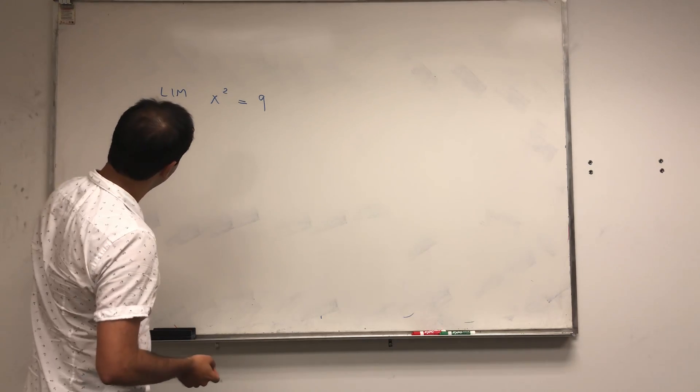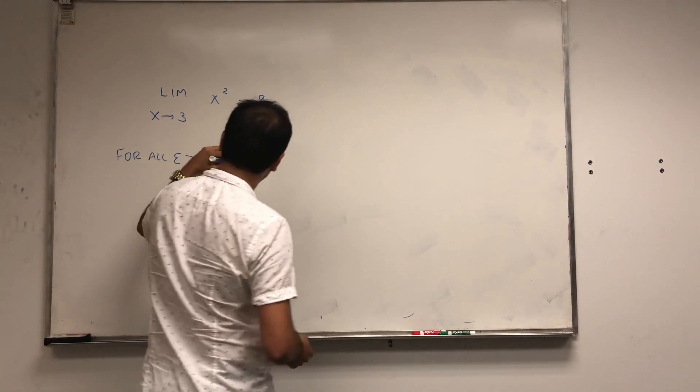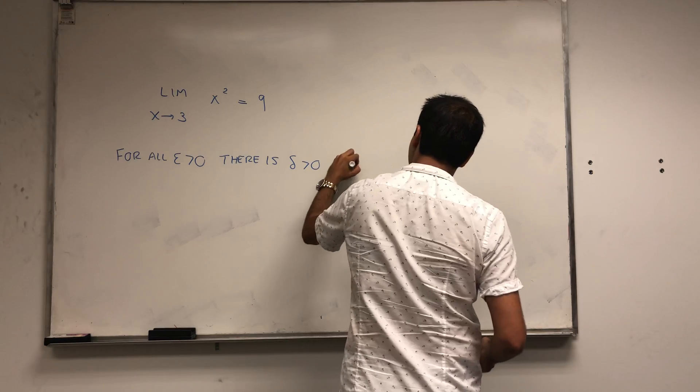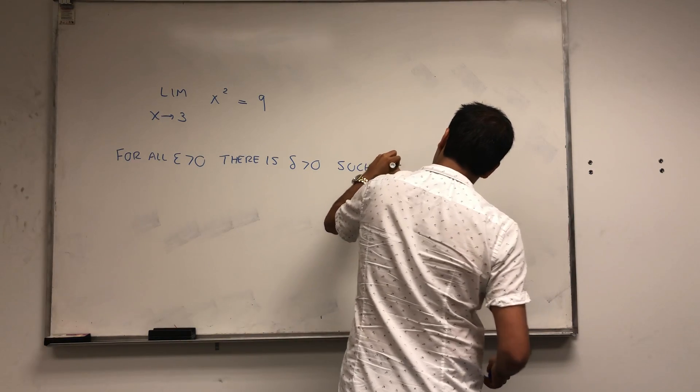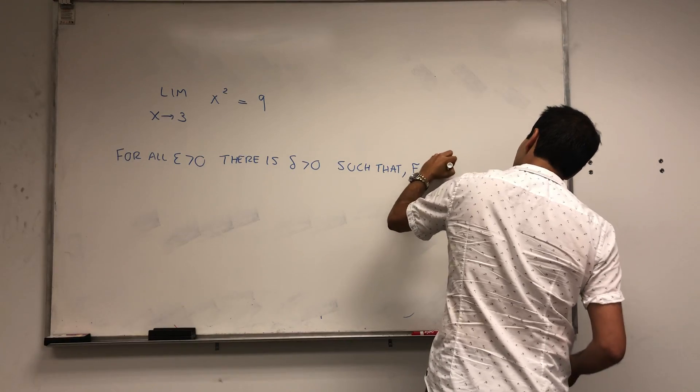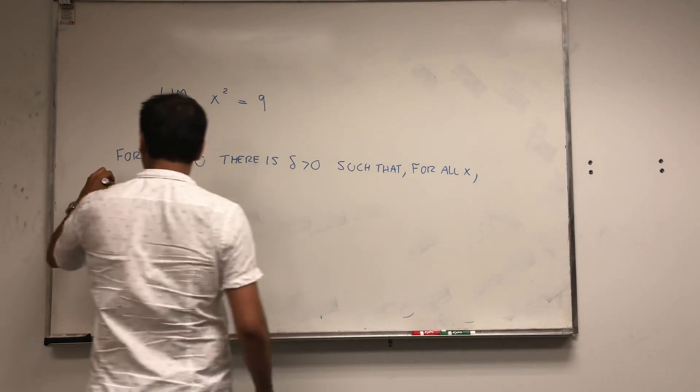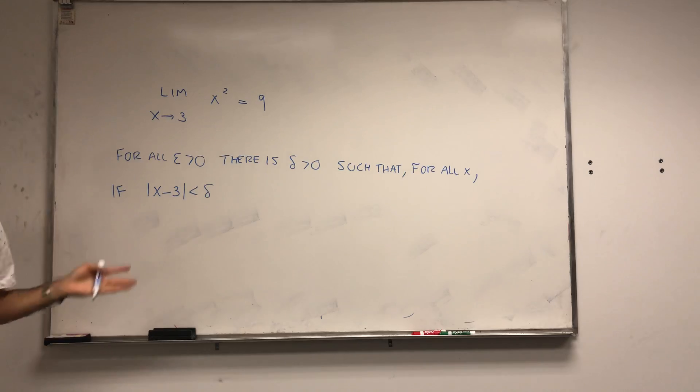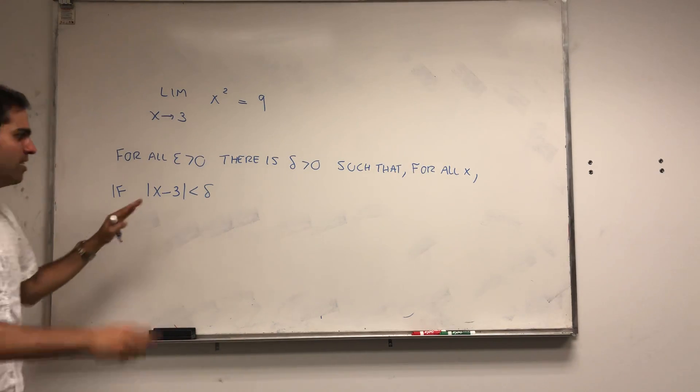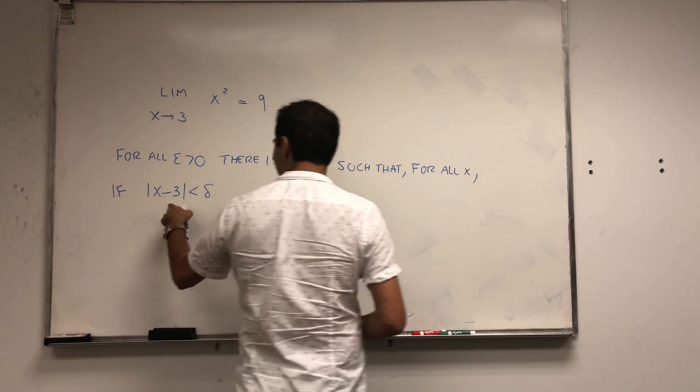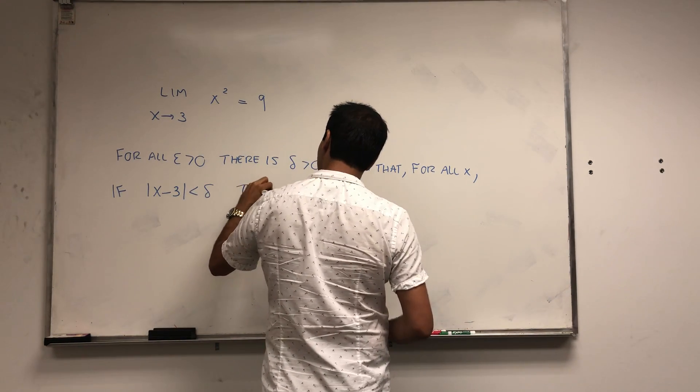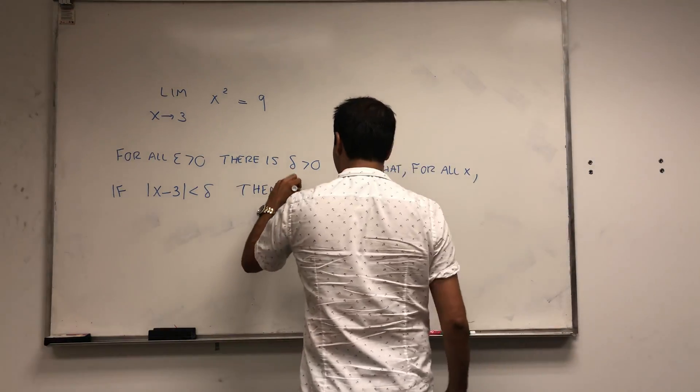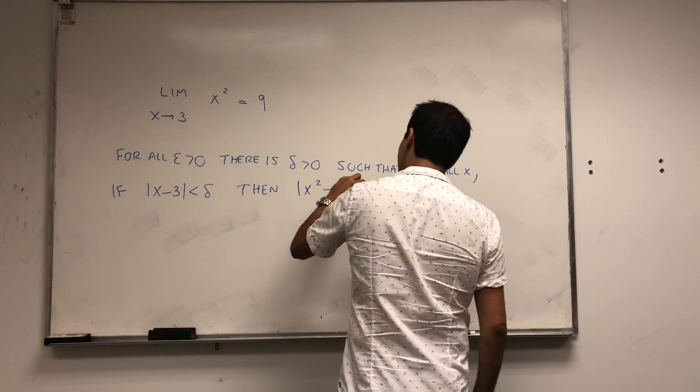What this means is that for all epsilon greater than 0, there is delta greater than 0 such that for all x, if x minus 3 is less than delta, and x cannot be equal to 3 but it doesn't really matter here, then if the difference of inputs is small, the difference of outputs is small as well. In other words, x squared minus 9 is less than epsilon.